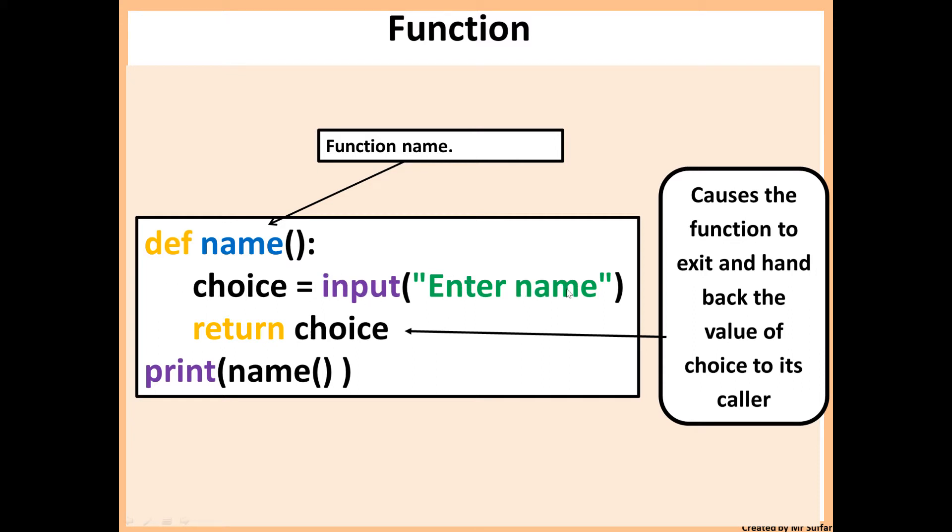Choice equals input, so here we've asked the user for a name. Then we return choice. Return choice will store the value of choice inside the function, and then it will exit the function and hand back the value to the caller, which in this case is name.